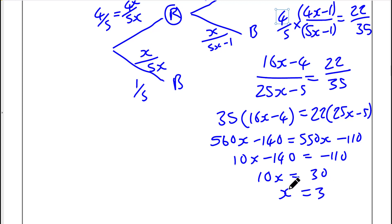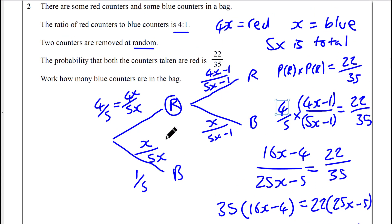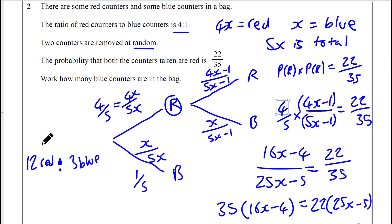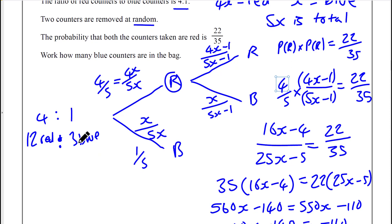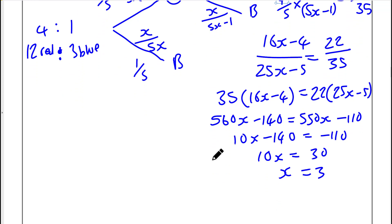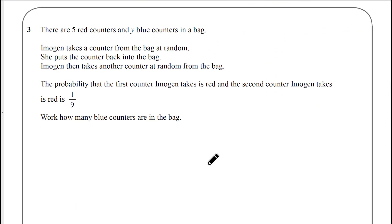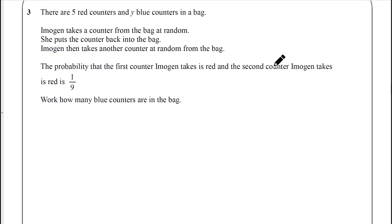So x equals 3 means there are exactly 3 blue counters in the bag, which means there are 12 reds — 12 red to 3 blue, which is the same ratio of 4 to 1. If you substitute that in you will get that probability. That's a five-marker and a really important skill.